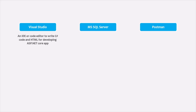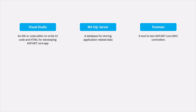We are also going to need MS SQL Server as a database for storing our application-related data. And we need Postman for testing our MVC controllers. Basically, Postman is a tool used for testing APIs. In this course, we are not going to create APIs but controllers, and those controllers can also be tested using Postman.